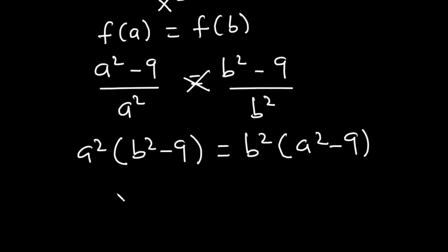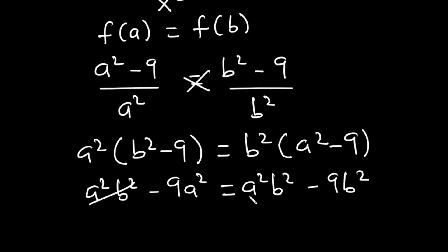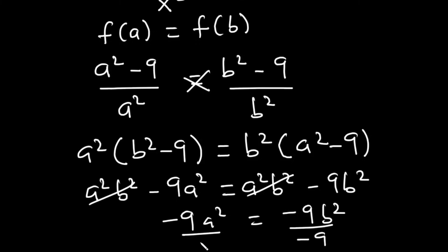Expanding: A²·B²−9A² = B²·A²−9B². The A²B² terms cancel, leaving −9A² = −9B². Dividing both sides by −9, we get A² = B².